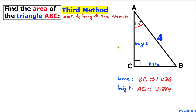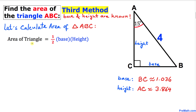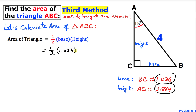Here's our third method. Once we have the base and height from the previous step, we use the formula: area equals one half times base times height, where base is 1.036 and height is 3.864. Filling in: one half times 1.036 times 3.864, which simplifies to give us area equals 2 square units.